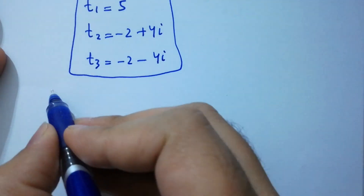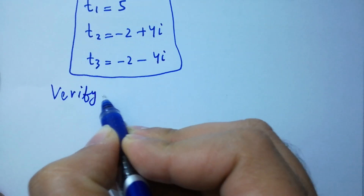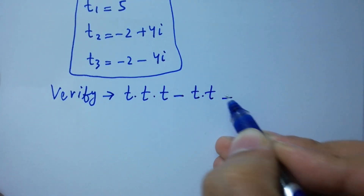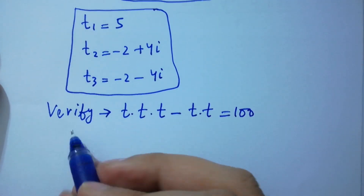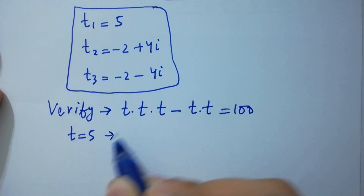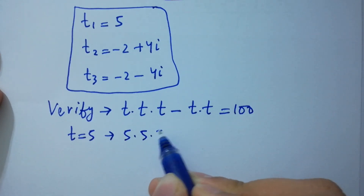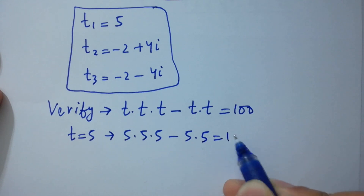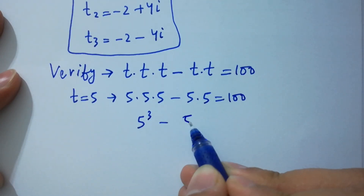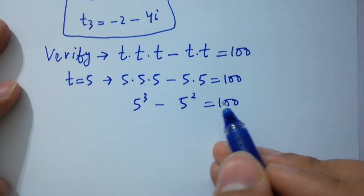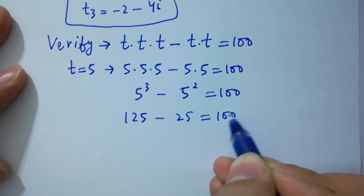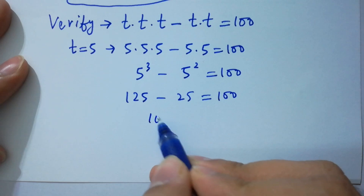Now I am going to verify. Putting t equals 5 into the equation t times t times t minus t times t equals 100: 5 times 5 times 5 minus 5 times 5 equals 100. That gives 5 cubed minus 5 squared equals 100, and 125 minus 25 equals 100. So 100 equals 100.